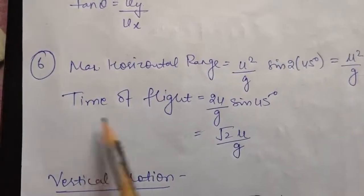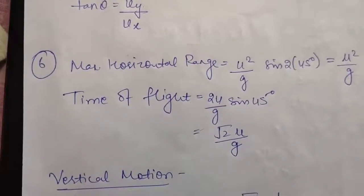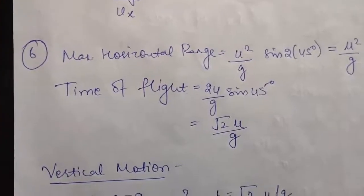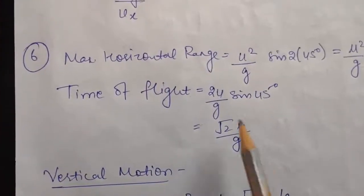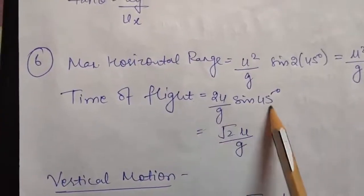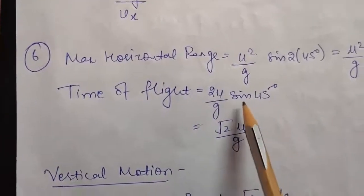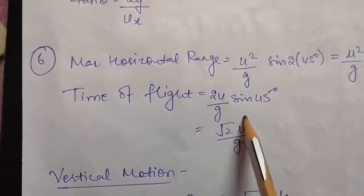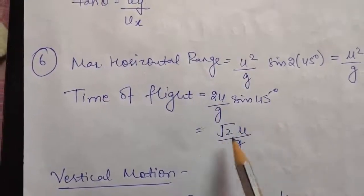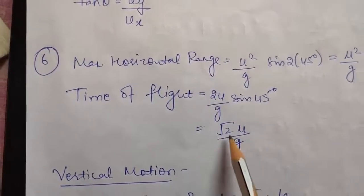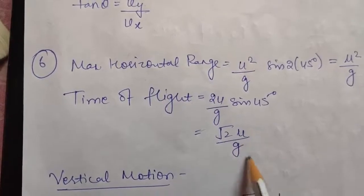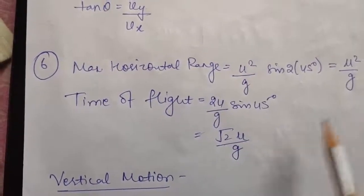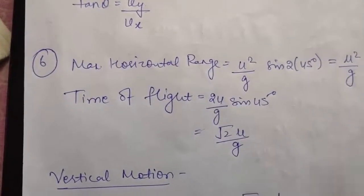If you calculate the time of flight for an angle of projection of 45 degrees, that will be 2u/g times sin 45. Sin 45 is 1/root 2, so 2 divided by root 2 will be root 2. You will get the time of flight as root 2 · u / g. So this is your maximum horizontal range and this is your time of flight.